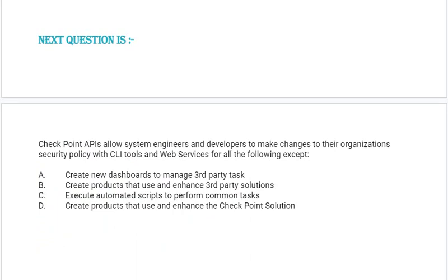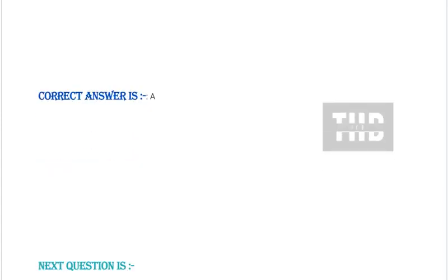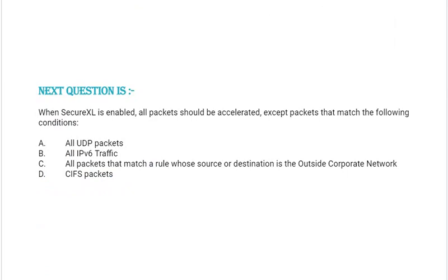Next question: Checkpoint APIs allow system engineers and developers to make changes to their organization's security policy with CLI tools and web services for all of the following except — option A: create new dashboards to manage third-party tasks, option B: create products that use and enhance third-party solutions, option C: execute automated scripts to perform common tasks, option D: create products that use and enhance the Checkpoint solution. Correct answer is option A.